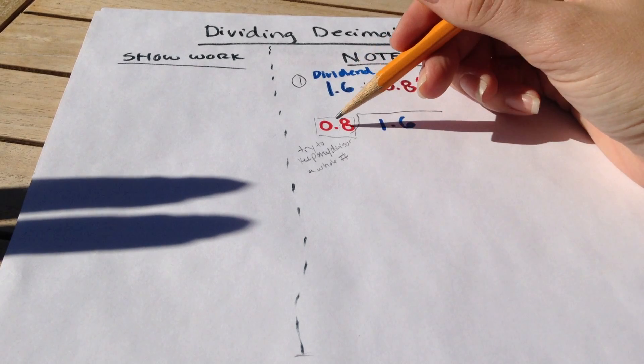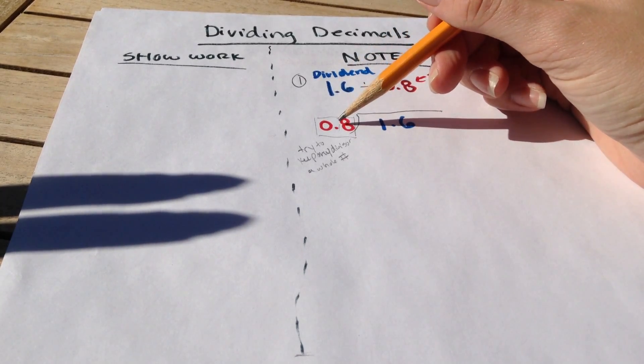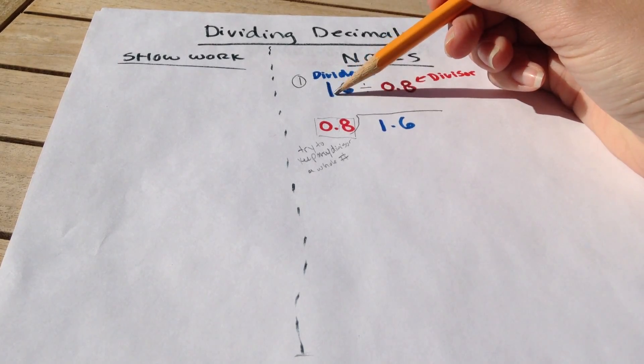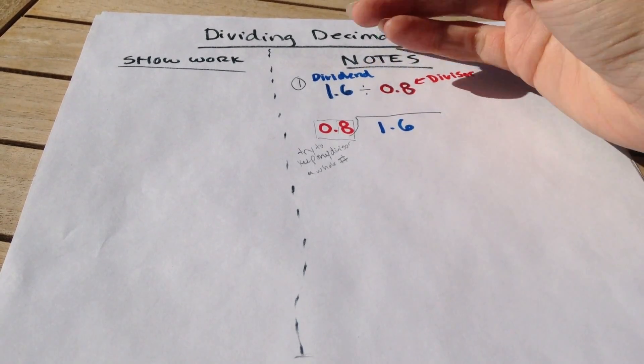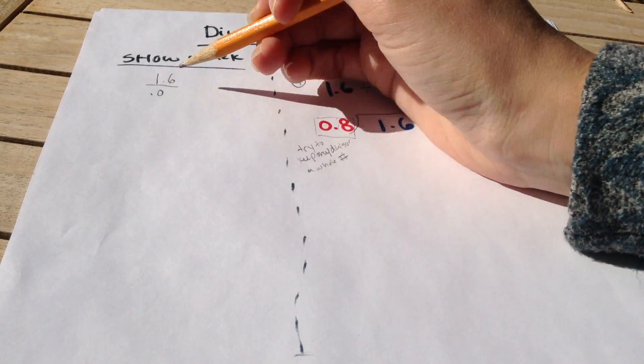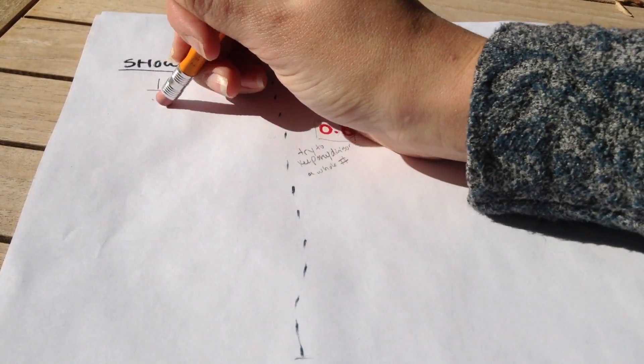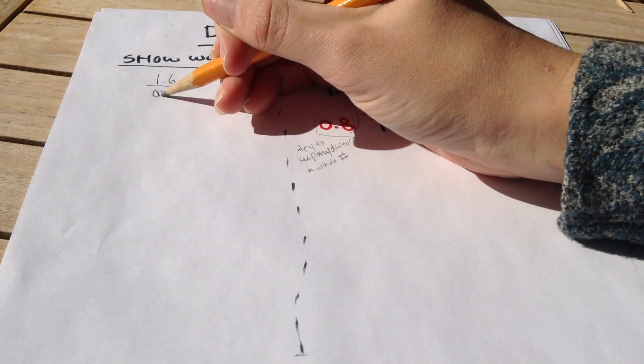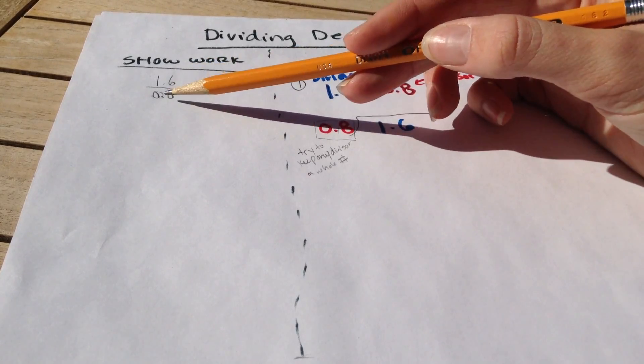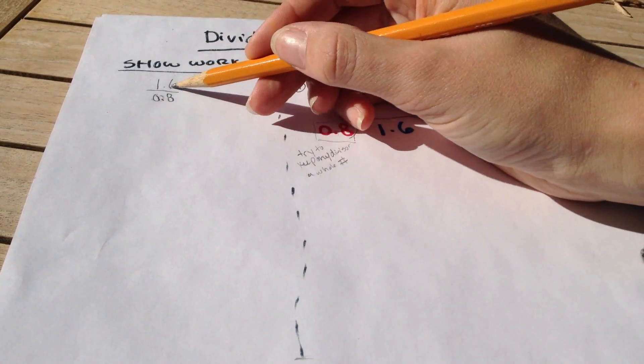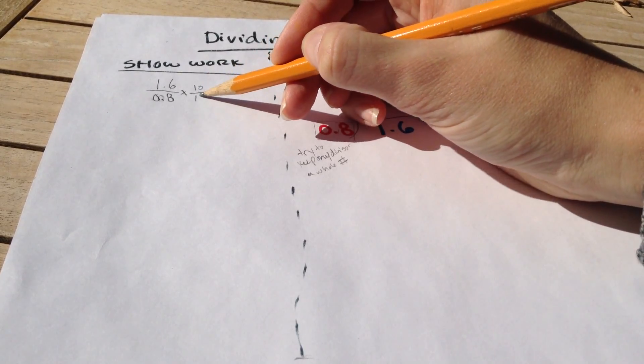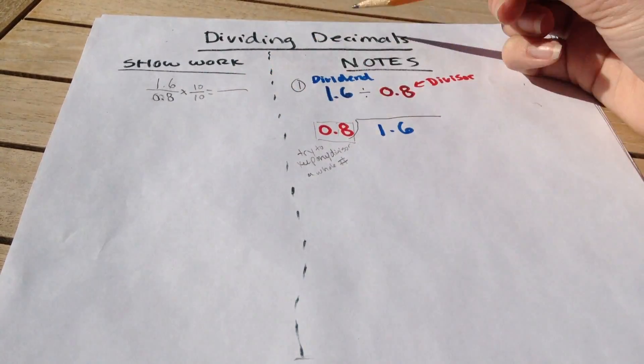Now, I don't really exactly know how to make something that is a decimal into a whole number. But let's look at how we can rewrite 1.6 divided by 0.8 as a fraction. We see that with the fraction bar, we can't really exactly be able to divide these, but I know that in order to make an equivalent fraction, I can multiply both my numerator and denominator by 10, or 10 over 10, to help create an equivalent fraction.